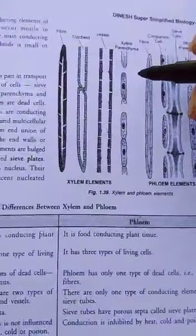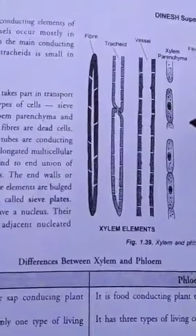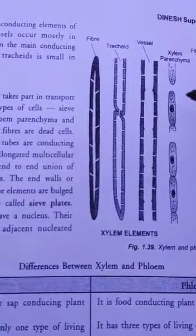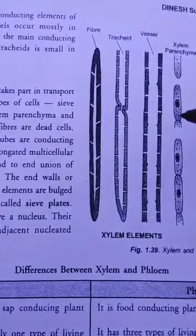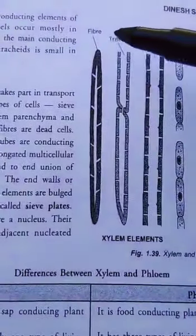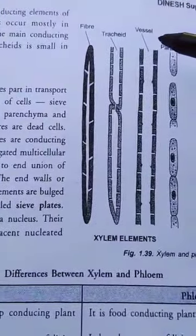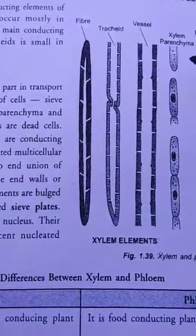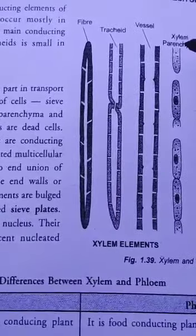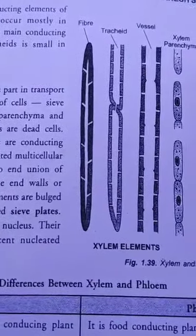Just take a look at this figure. This is a figure in which xylem elements have been shown. This figure shows xylem elements. Now this is xylem fiber, this is xylem tracheids, this is xylem vessel, and this is xylem parenchyma.